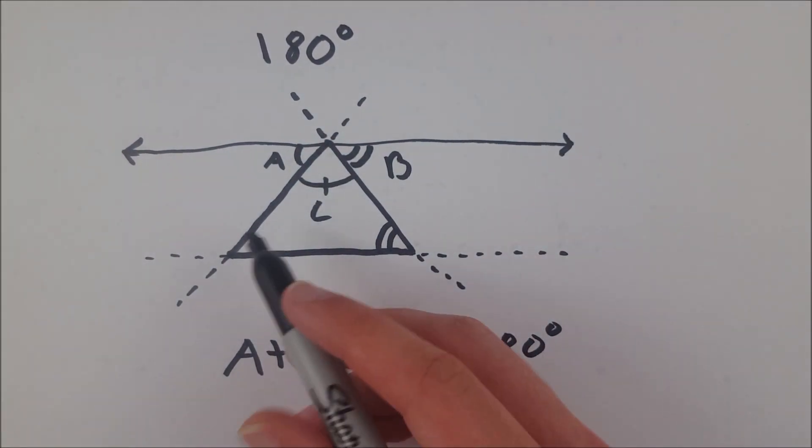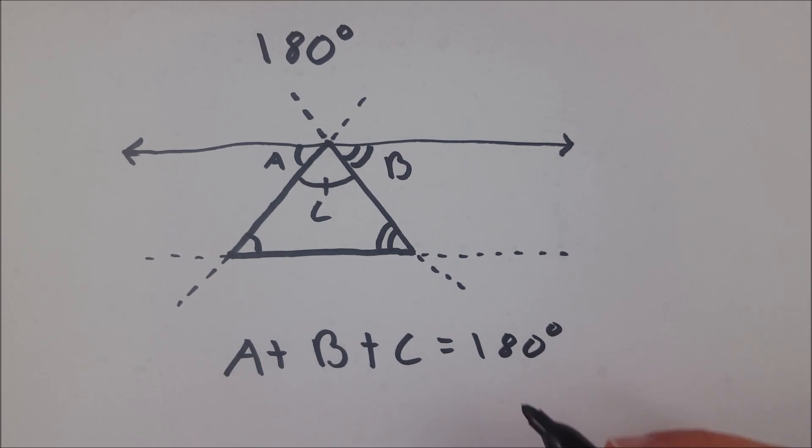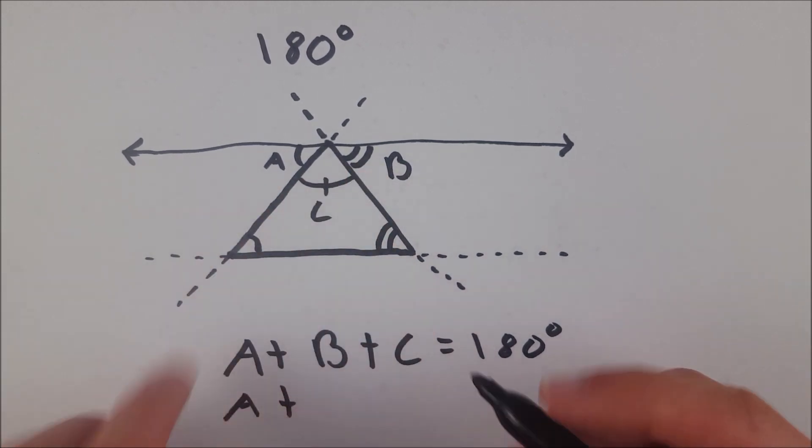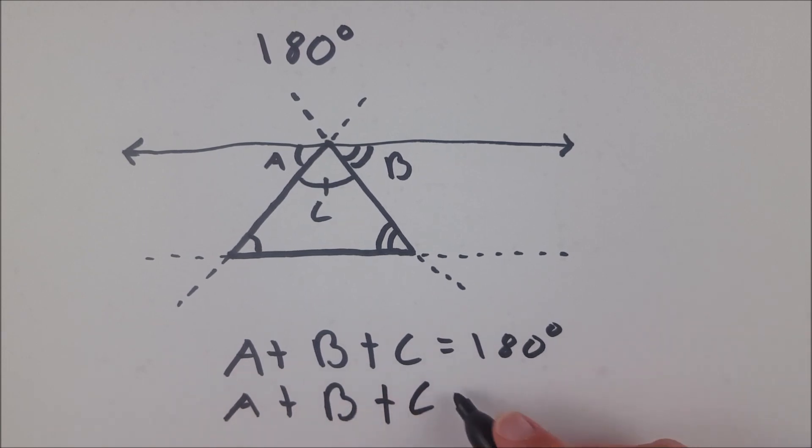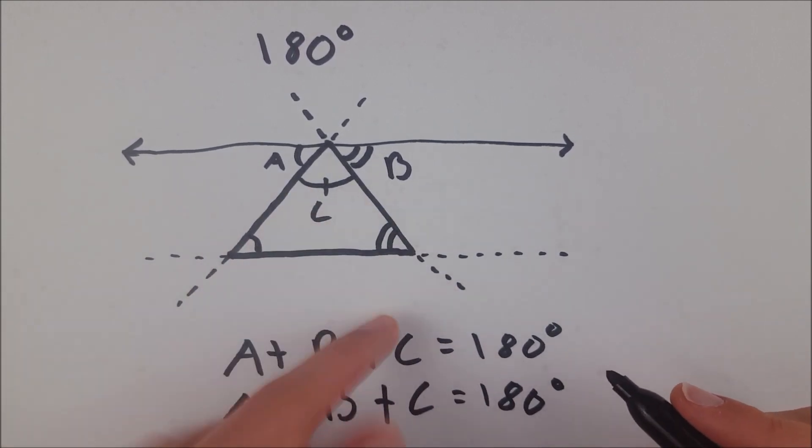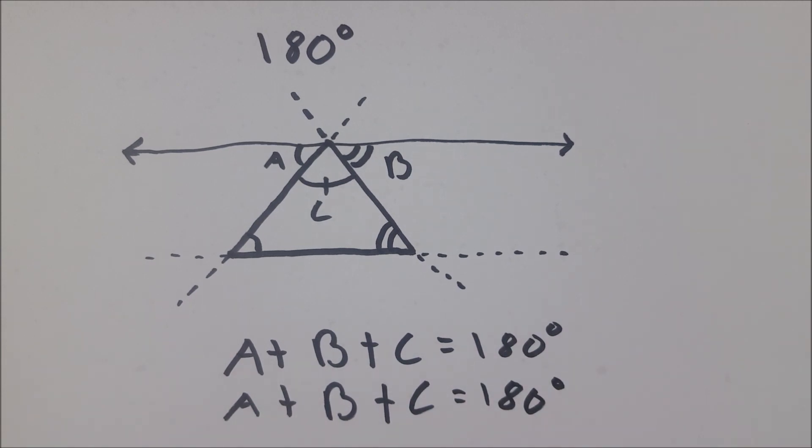And then, the angle sum of the triangle is the same thing. It's this angle, which is congruent to a, so that's a, plus this angle, congruent to b, plus b, plus c. We already said that's 180, so it's guaranteed that any given triangle, that's what this is, any random triangle, has to have 180 degrees.